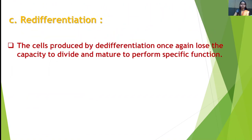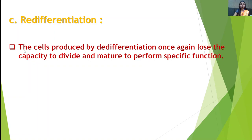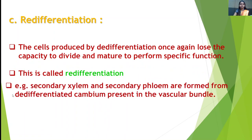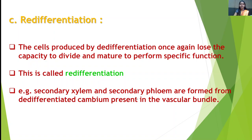The third concept is re-differentiation. The cells produced by de-differentiation once again lose the capacity to divide and mature to perform specific functions — this is called re-differentiation. For example, secondary xylem and secondary phloem are formed from de-differentiated cambium present in the vascular bundle.